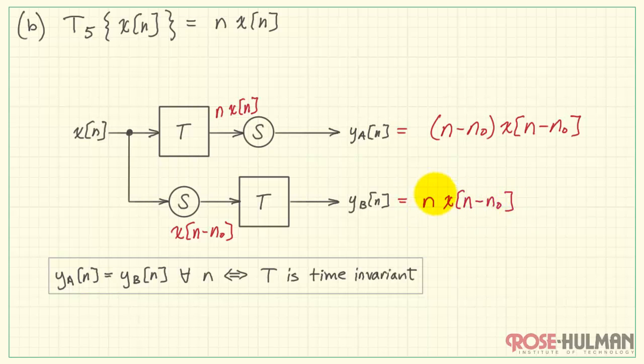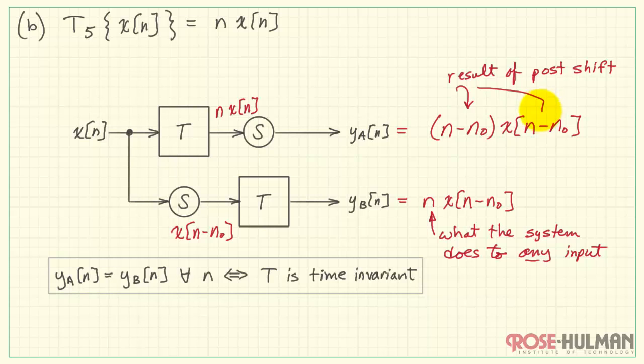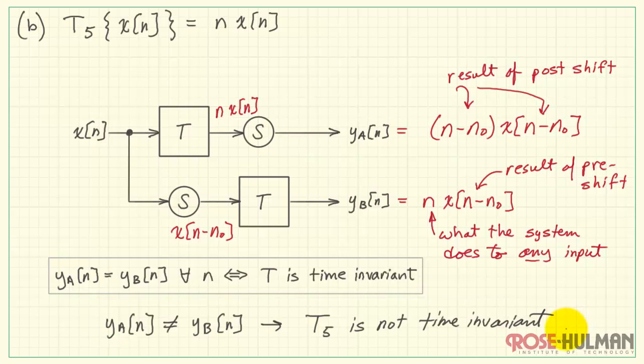Now let's take a look at the components here. Clearly, we know they're different. We know the system is not time invariant. But here we recognize that n is what the system does to any input. Here, n minus n_0 is the result of this post-shift operation, which also applies to the input sequence X. Here, X[n - n_0] is the result of our pre-shift operation. Again, these are not the same, so we conclude that T_5 is not time invariant.